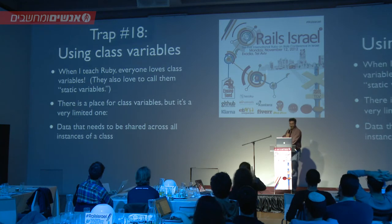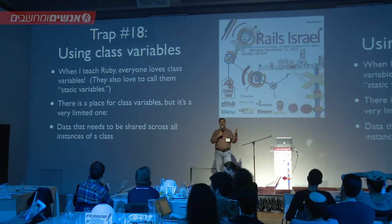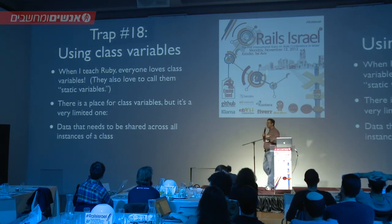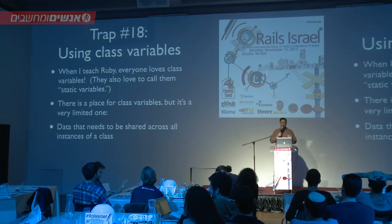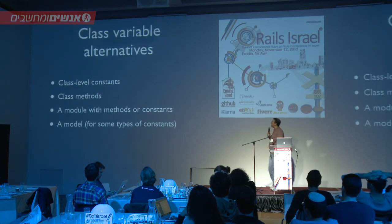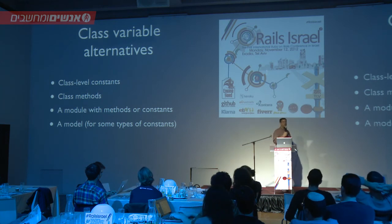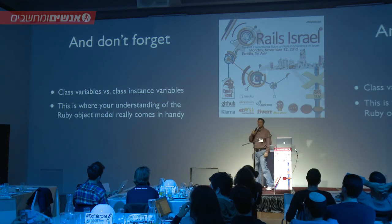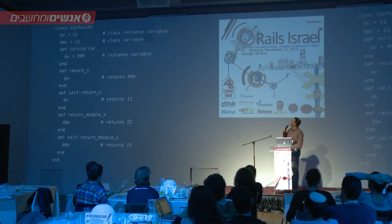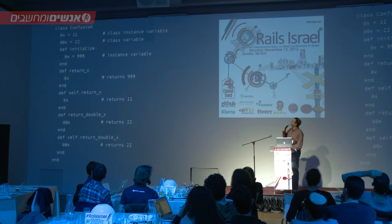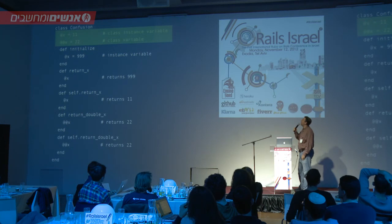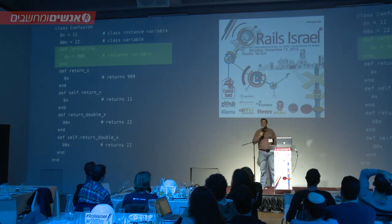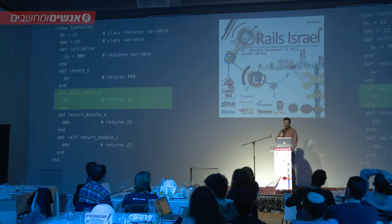Class variables — when I'm teaching Ruby classes, everyone wants to know about class variables; actually they want to know about static variables. Class variables are very confusing and not always the best thing to use unless you really know what you're doing. They make the maintainability of your software harder. In many cases you can use constants, class methods, an external module, or even an Active Record model. People forget about the distinction between class variables (@@x) and class instance variables (@x at the class level) versus instance variables (@x), which are two totally different variables with nothing to do with one another. People make these mistakes all the time because they don't understand what's going on.